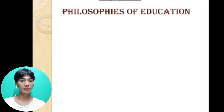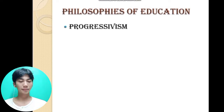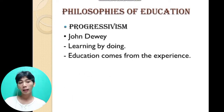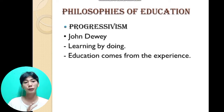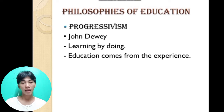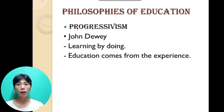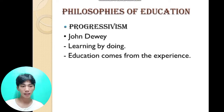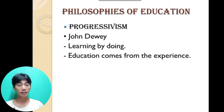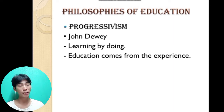The next philosophy is progressivism, given by John Dewey. The keyword is learning by doing — education comes from experience. This philosophy of education is student-centered, which focuses on developing the students' moral compass and process of development. Experience is the best teacher; we draw lessons when we have more experience.